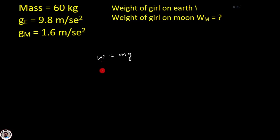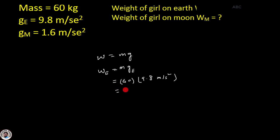تو سب سے پہلے میں find out کرتا ہوں weight of girl on Earth۔ اس کے لئے equation لگاتا ہوں: W_e = m × g_e یعنی gravitational acceleration on Earth۔ یہاں پہ values put کرتا ہوں: mass of girl جو ہے وہ 60 kg ہے اور g کی value 9.8 m/s² ہے۔ ان دونوں کو multiply کروں گا تو value آئے گی 588 kg·m/s²، یعنی 588 Newtons۔ تو weight of girl on the surface of Earth = 588 N۔